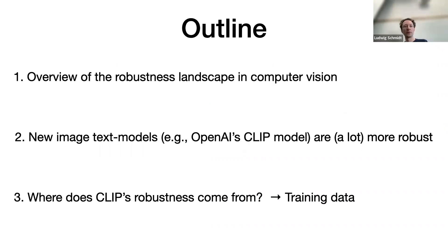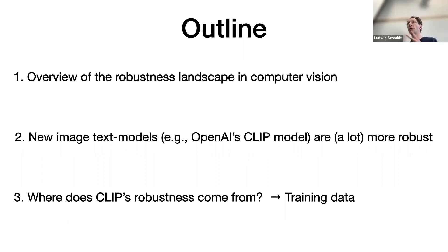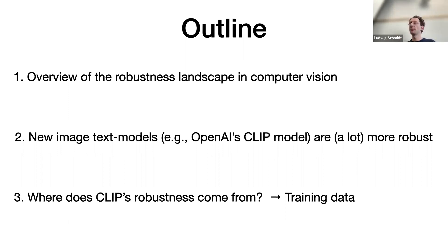What I want to do in this talk is explain where the training data perspective comes from and convince you that working on pre-training datasets is a really impactful way to make machine learning more reliable. We'll do this in three parts: first, a broad survey of robustness in computer vision; second, we'll look at OpenAI's CLIP model, which made a ton of progress on challenging distribution shift benchmarks; and third, a deep dive into CLIP to study where the robustness comes from — and the answer is going to be it's all in the training data.